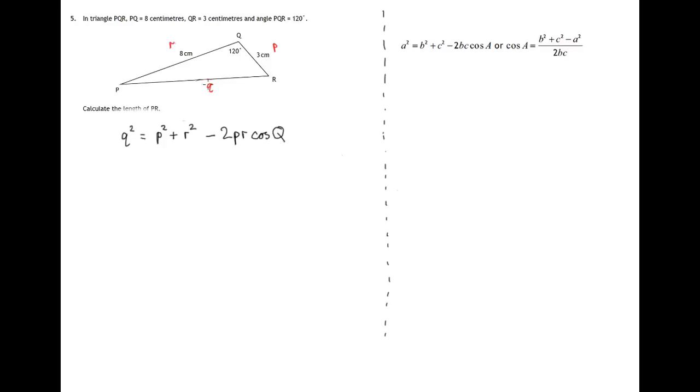Now, if we look at what we know in this diagram, we know side P, we know side R, and we know angle Q. So everything on the right-hand side of this equation, we know, and therefore we now just substitute values.